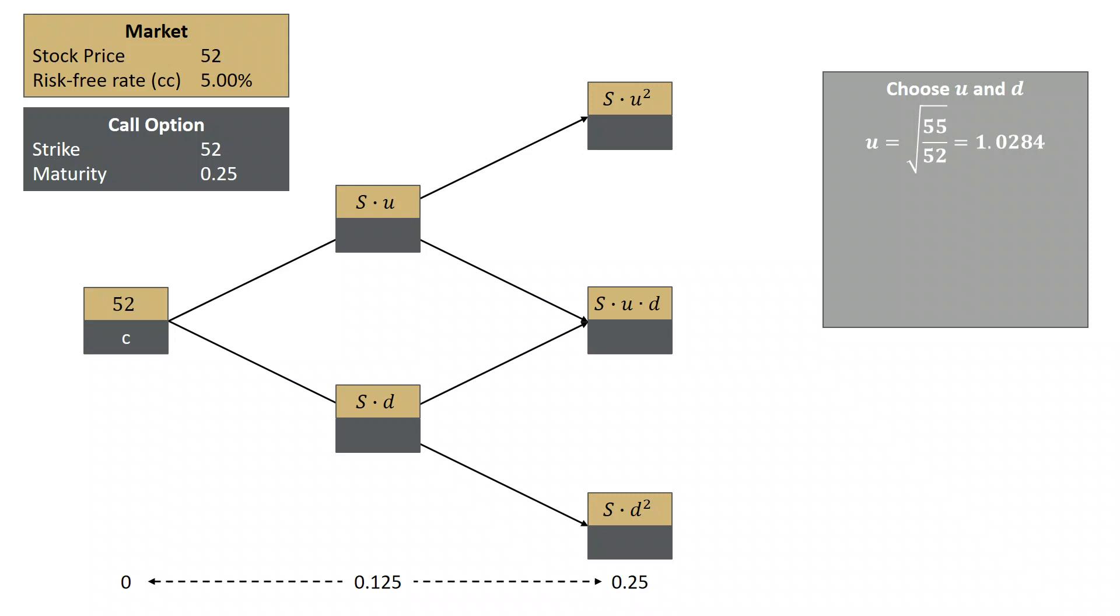So we're going to choose U equal to the square root of 55 over 52, which is 1.0284. And that means S times U squared - S is 52 times U squared - is going to give us 55 at that top node on the right.